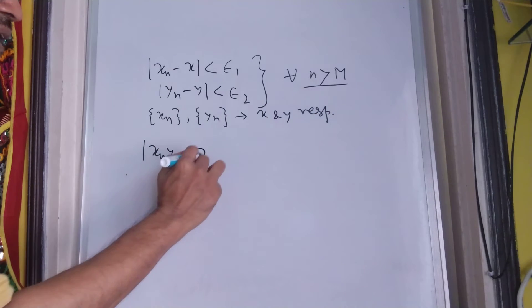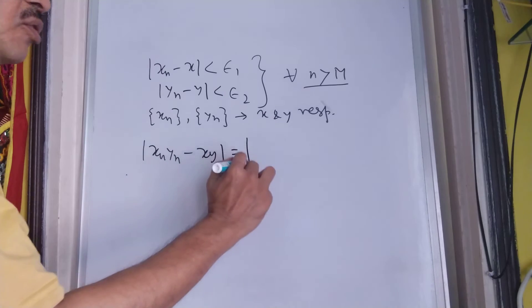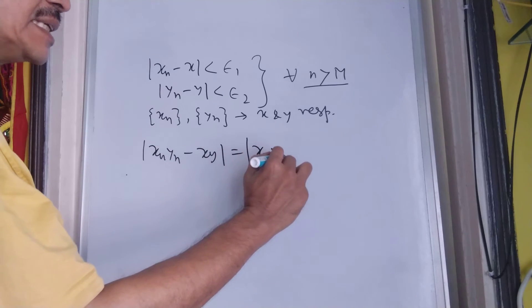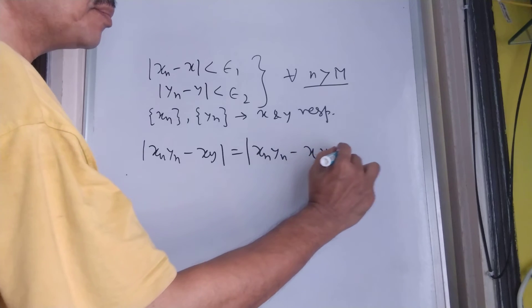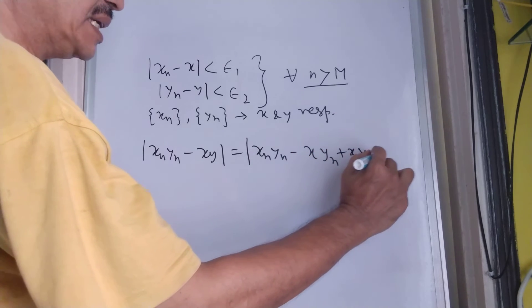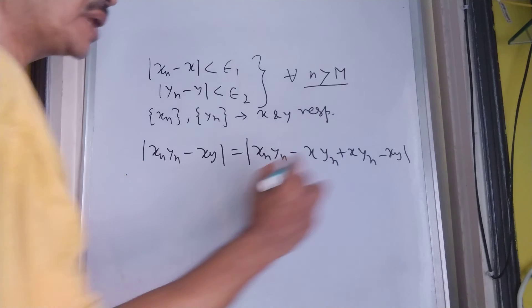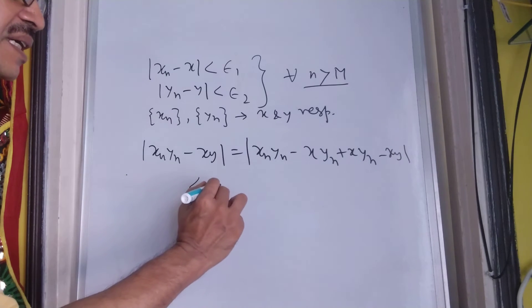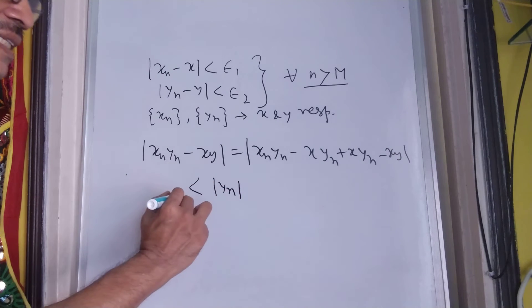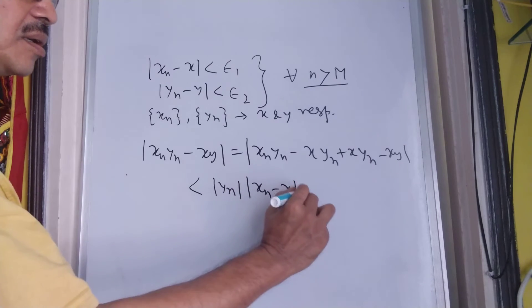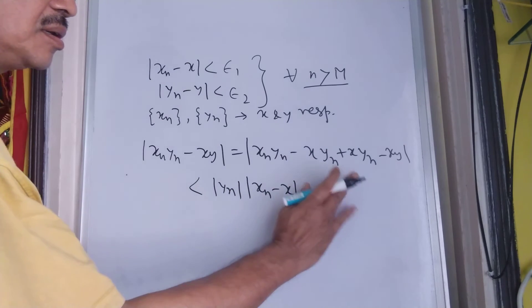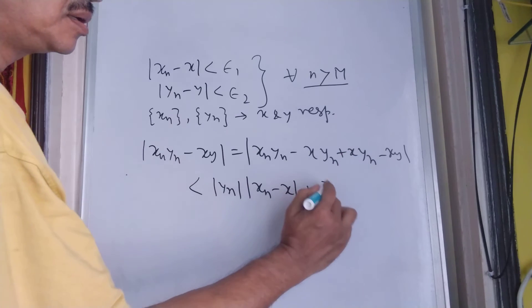Now, what about xn yn minus xy? We can always write it like this: xn yn minus xyn plus xyn minus xy, which can always be written as strictly less than xn yn minus xn.